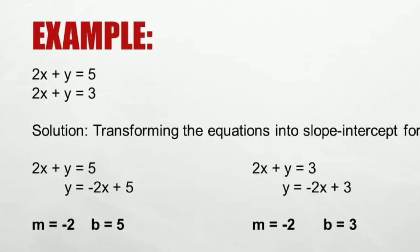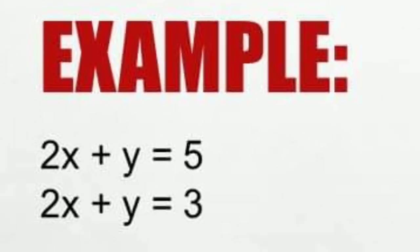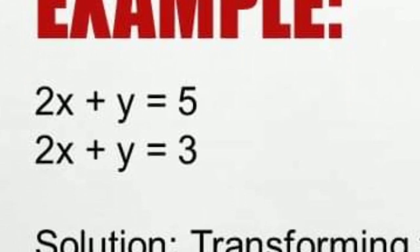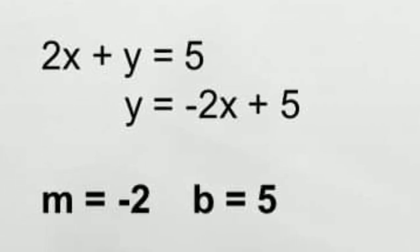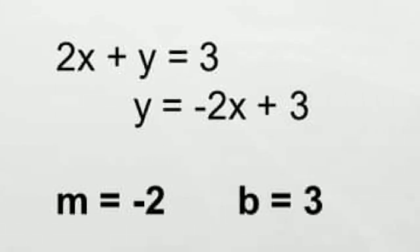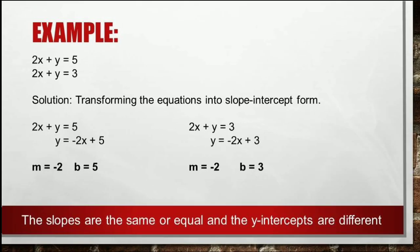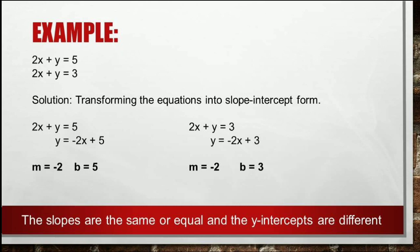For example: 2x + y = 5 and 2x + y = 3. Transforming into slope-intercept form, the first equation gives y = −2x + 5, with slope −2 and y-intercept 5. The second equation gives y = −2x + 3, with slope −2 and y-intercept 3. As you can see, the slopes are the same and the y-intercepts are different. Therefore, they are inconsistent.